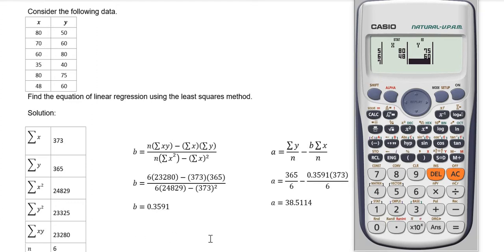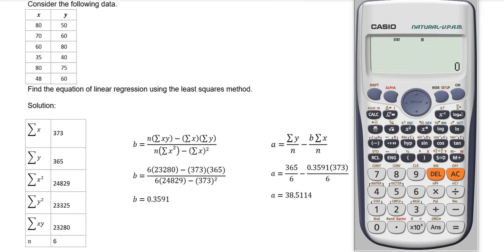Next, clear the calculator screen by pressing the AC button. To obtain the linear regression equation, we need to find the A and B values. The A and B values can be obtained from this formula.